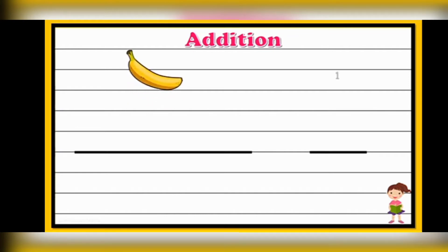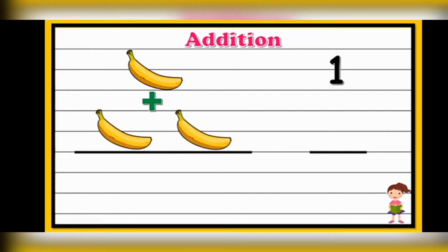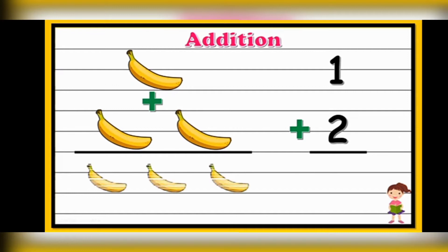So we have 1 banana plus 2 bananas. So you have to find the total number of bananas. Let's start counting again: 1, 2, 3. So totally we have 3 bananas. So 1 plus 2 gives 3.